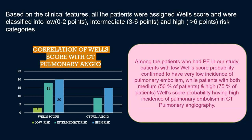Coming to the correlation with the Wells score: three patients had a low-risk Wells score, 18 patients had an intermediate Wells score, and 20 patients had high risk. On CT pulmonary angiography, patients in the low-risk group did not have any embolism, 50% of the 18 intermediate-risk patients had pulmonary embolism, and 15 of the 20 high-risk patients had embolism.